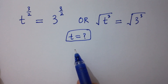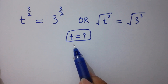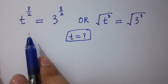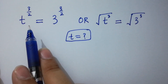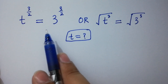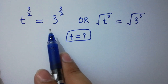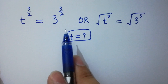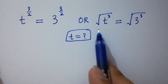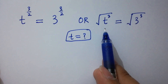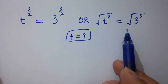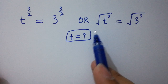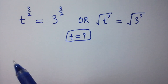Hello friends, find the value of t if t to the power 3 over 2 equals 3 to the power 3 over 2, or the cube root of t cubed equals the cube root of 3 cubed. Let's have a solution.